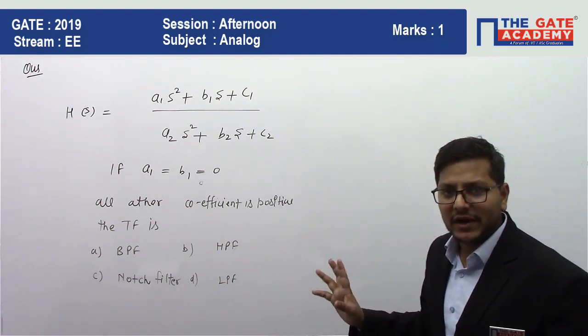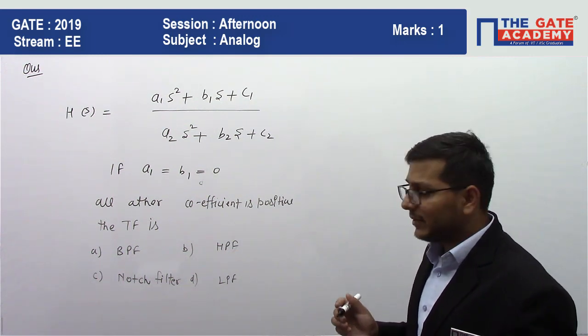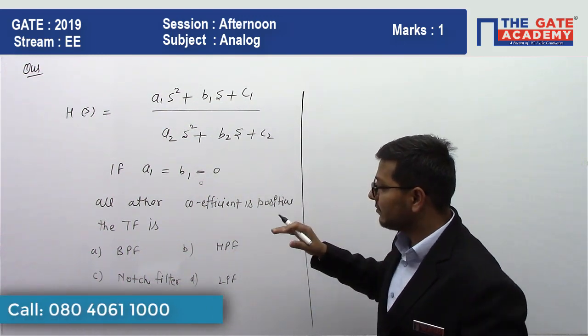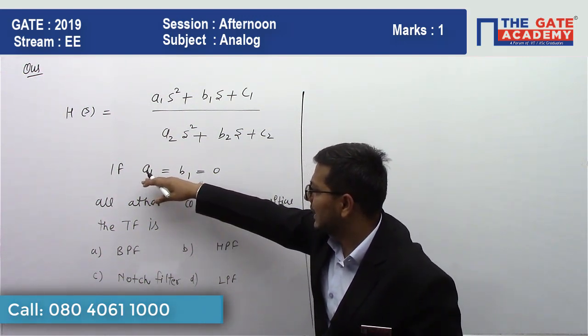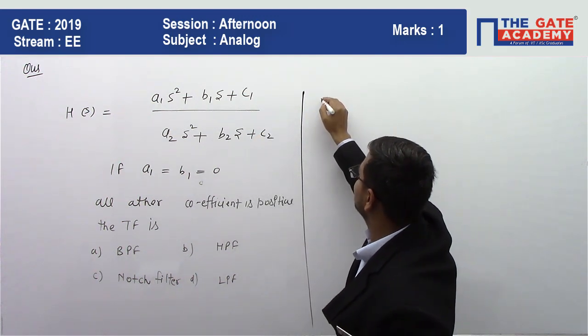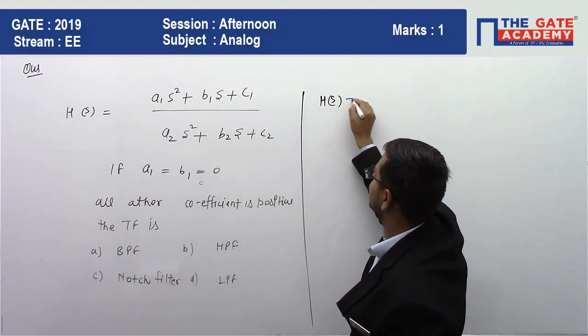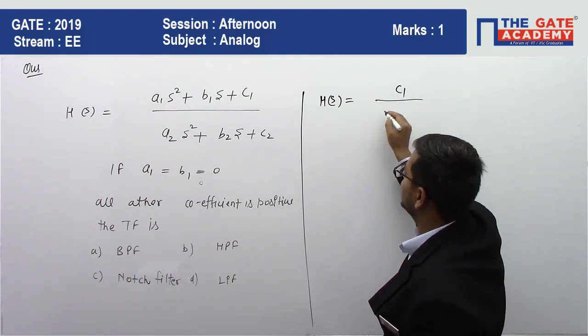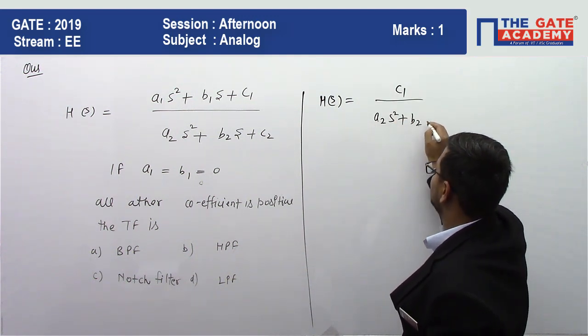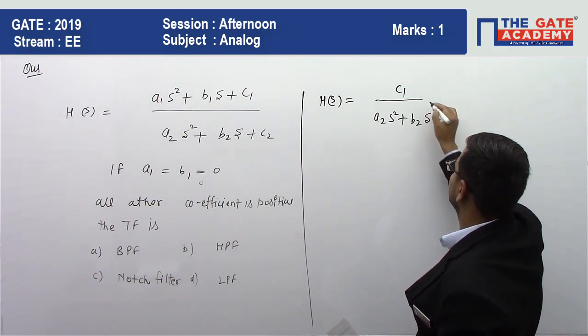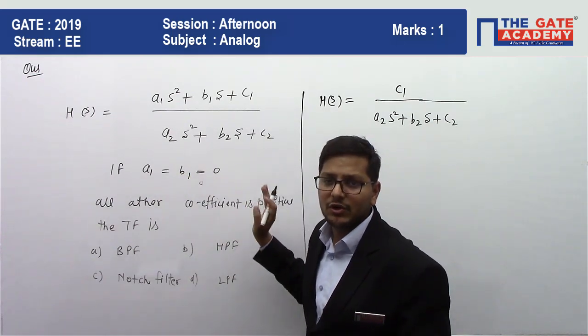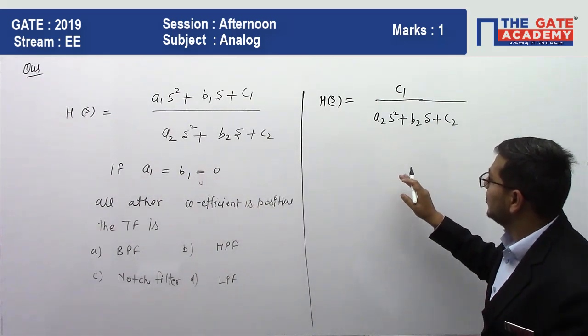So first of all, we have to see which type of filter. To find the transfer function, we have to solve and try to find out the type of filter. We have to find the value after putting a1 and b1 equal to zero. This is the transfer function after putting a1 and b1 equal to zero.